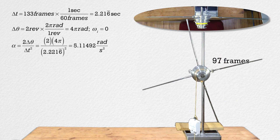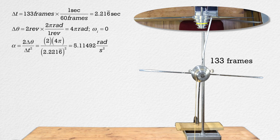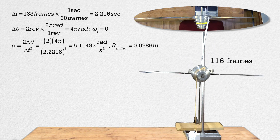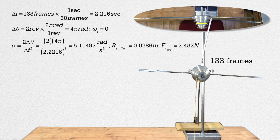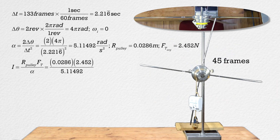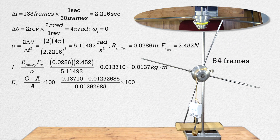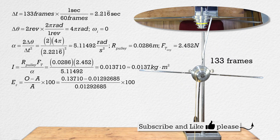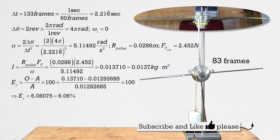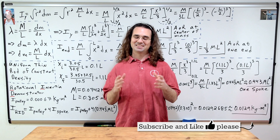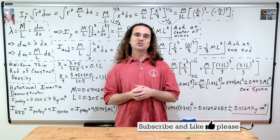It took the pulley 133 frames or 2.216 repeating seconds starting from rest to go through two revolutions or 4π radians. That means the angular acceleration of the pulley was 5.115 rad/s². The radius of the pulley was 0.0286 meters and the average measured force of tension was 2.452 newtons. This gives us a measured rotational inertia of 0.0137 kg·m². Using the relative error equation, we get a difference of roughly 6% — I would consider that to be pretty darn close. Thank you very much for learning with me today.